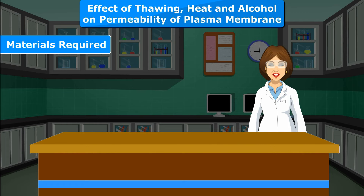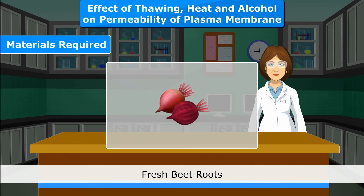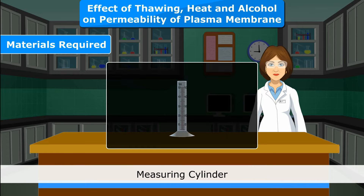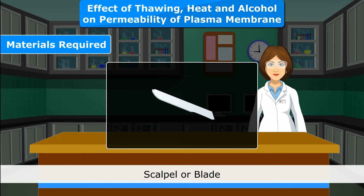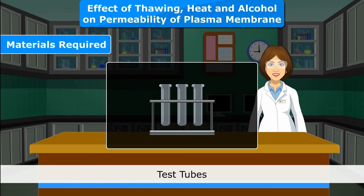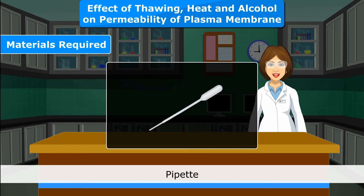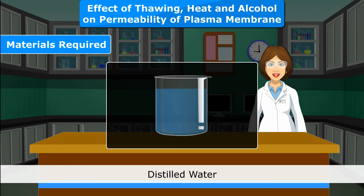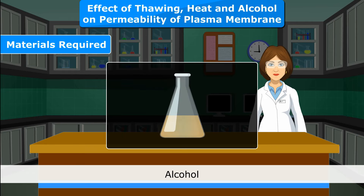Materials Required: Fresh beetroots, cork borer, measuring cylinder, scalpel or blade, test tubes, pipette, test tube stand, distilled water, and alcohol.